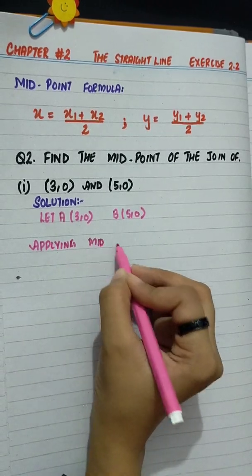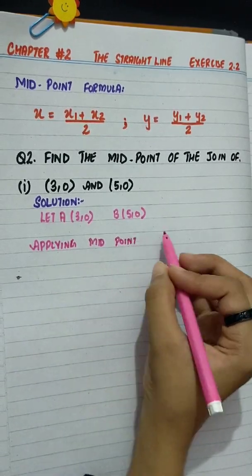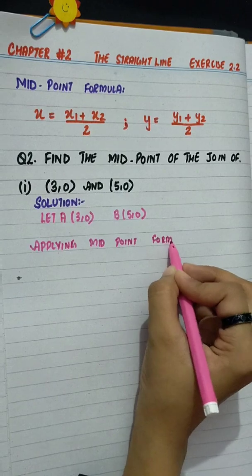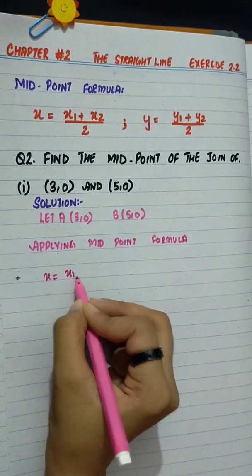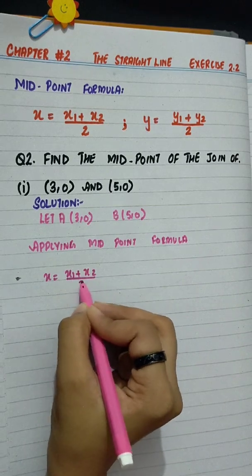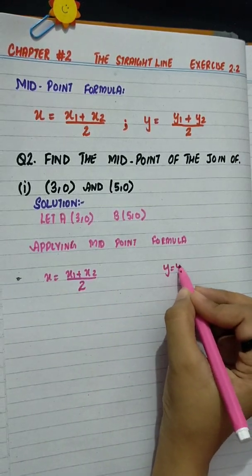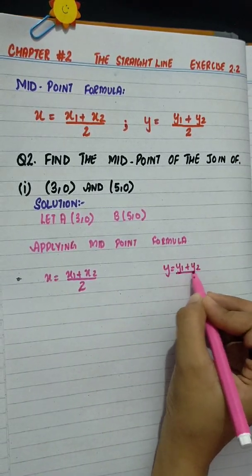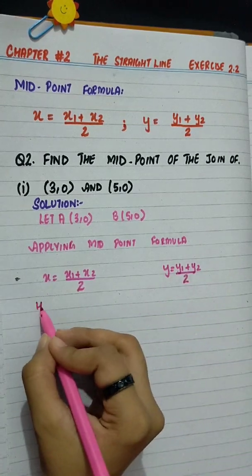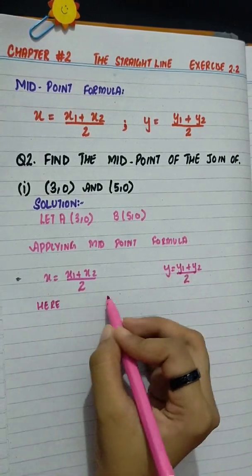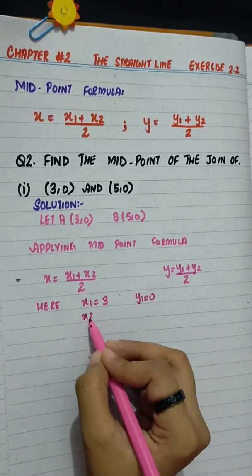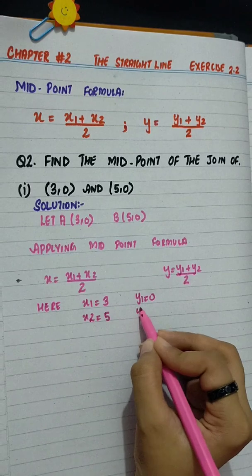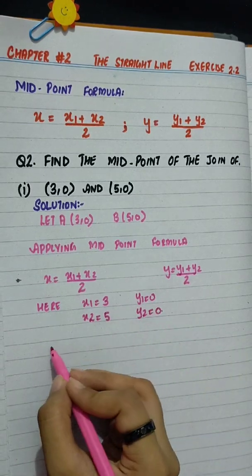Applying midpoint formula. Here, x is equal to x1 plus x2 divided by 2 and y is equal to y1 plus y2 divided by 2. Here, x1 is 3, y1 is 0, x2 is 5 and y2 is 0.